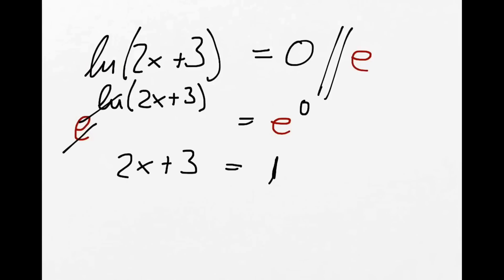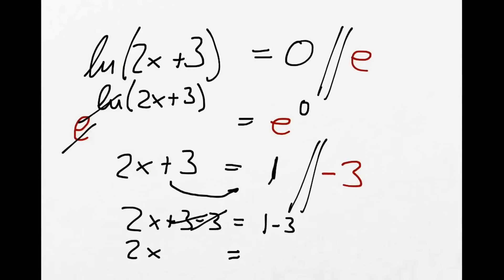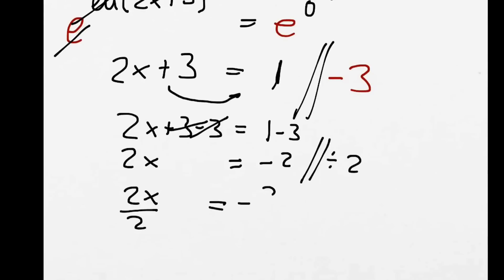All we need to do is solve for x. We get the plus 3 to the other side by taking away 3 from both sides: 2x plus 3 minus 3 equals 1 minus 3. The plus 3 and minus 3 eliminate each other, giving us 2x equals minus 2. We divide both sides by 2: 2x divided by 2 equals minus 2 divided by 2. The 2 cancels out and we've got x equals minus 1. That is the answer.